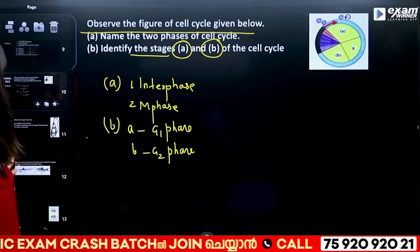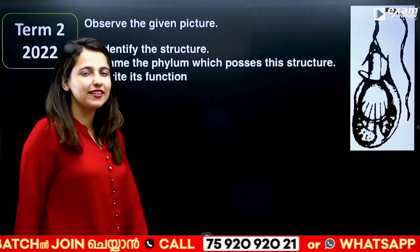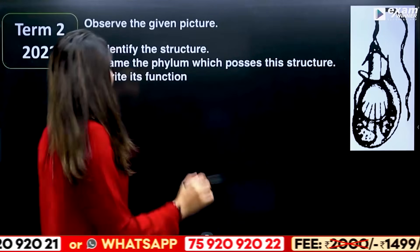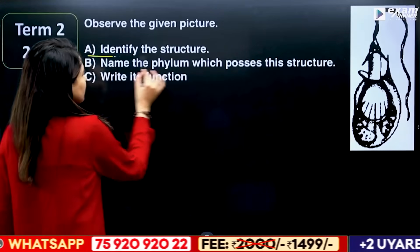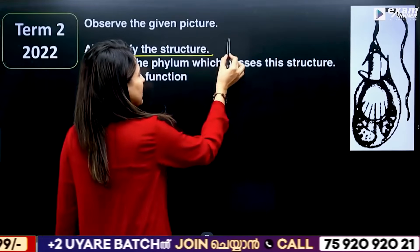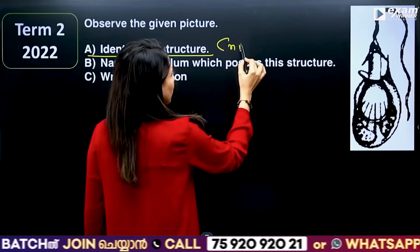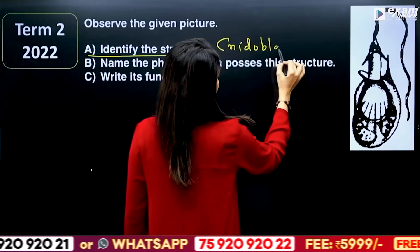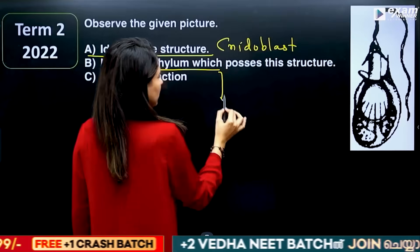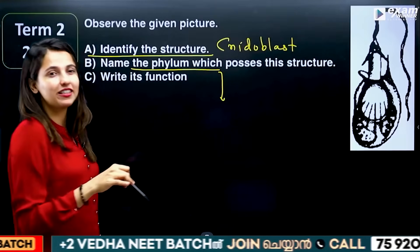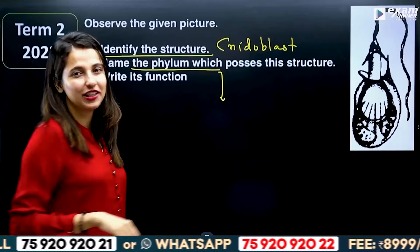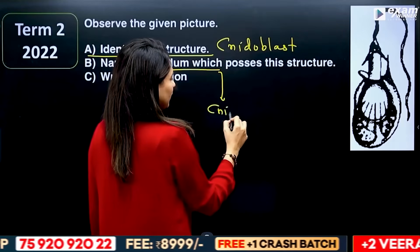This is our annual exam question. Identify the structure: if you look carefully, this is a nematoblast. This is the name of the phylum which possesses this structure. The phylum is called Cnidaria.